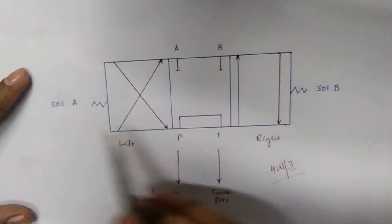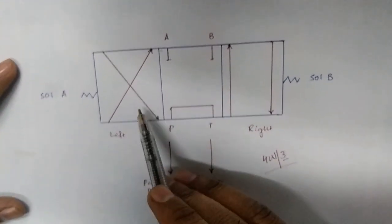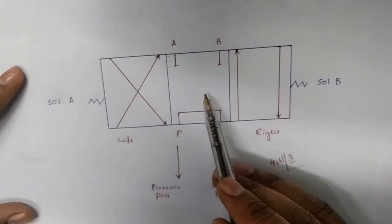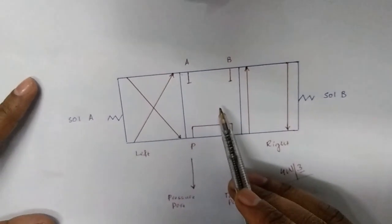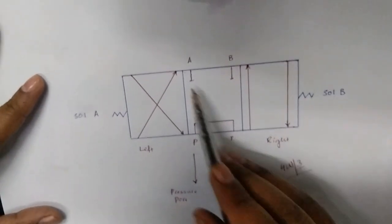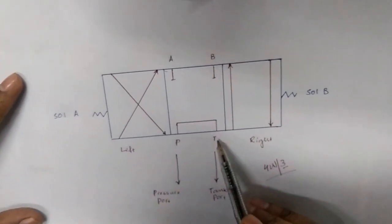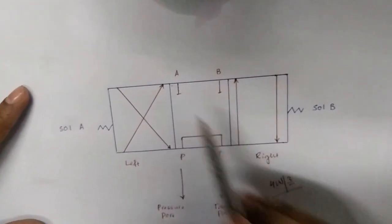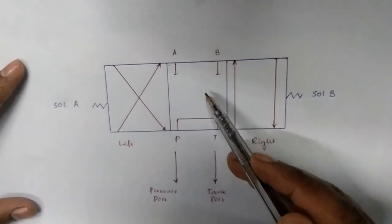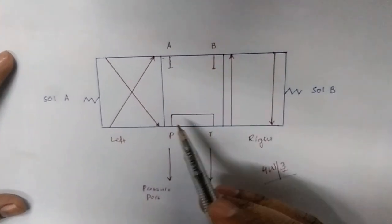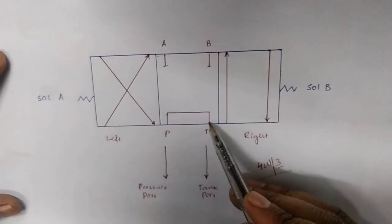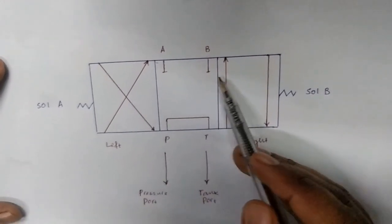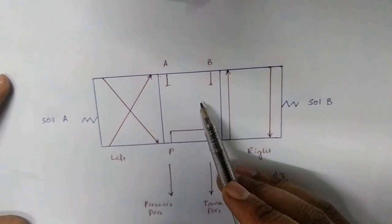When solenoid A is active, the right portion is active. When solenoid B is active, the left position is active. This is the neutral position when there is no solenoid activation. P is the pressure port and T is the tank port, while A and B are the actuator ports. In the center position, P and T ports are interconnected, while A and B ports are disconnected — they are not connected with each other or with any other port.